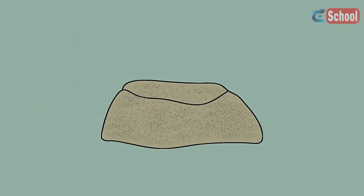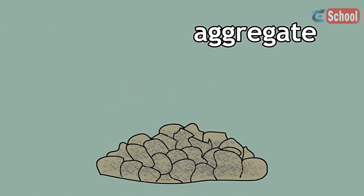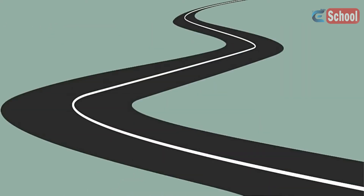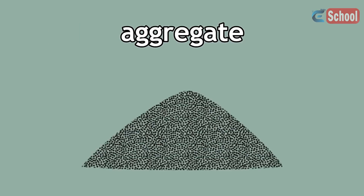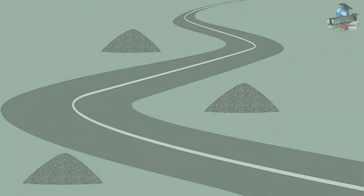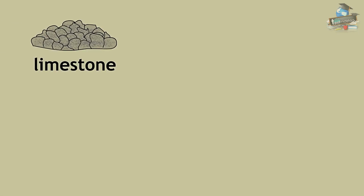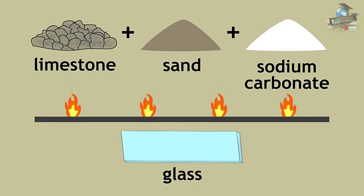Limestone can even be crushed and used as an aggregate when paving roads. The term aggregate simply refers to crushed stones and minerals for construction or road building purposes. When limestone is heated with sand and sodium carbonate, certain types of glass can be made.